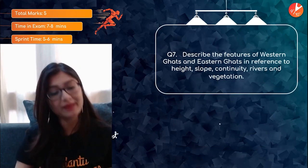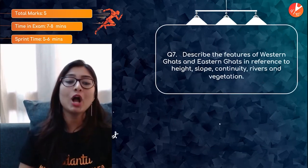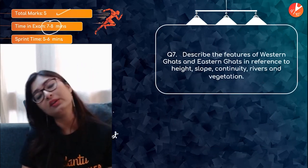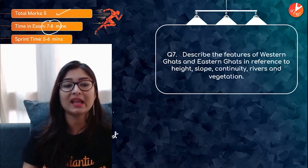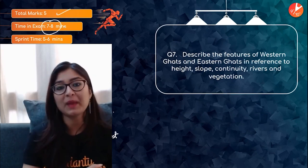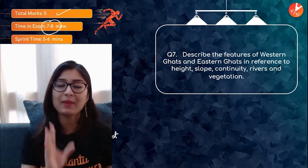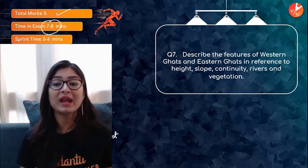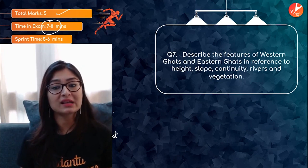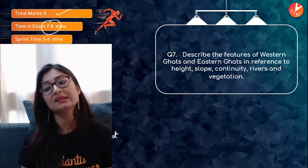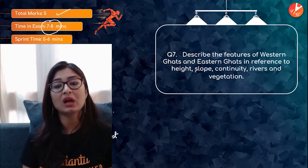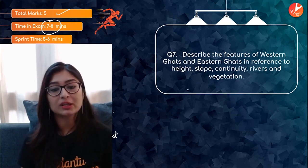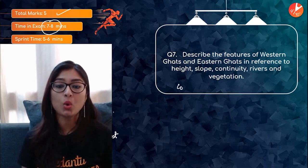Moving on to the next question, a five-marker: describe the features of Western Ghats compared to Eastern Ghats in reference to height, shape, continuity, rivers, and vegetation. The coastline is very long — around 6,000 km — but there is a lot of variation between the Western and Eastern Ghats.